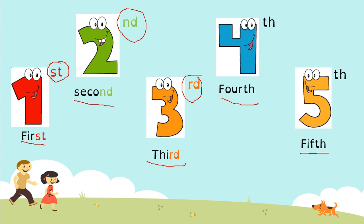Pay attention. Number one is the first, so you have to write 'st.' Number two is the second, so you have to write 'nd.' Number three is the third, so you have to write 'rd.' Number four and number five are fourth and fifth, so you have to write 'th.'